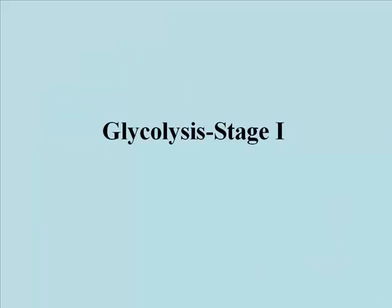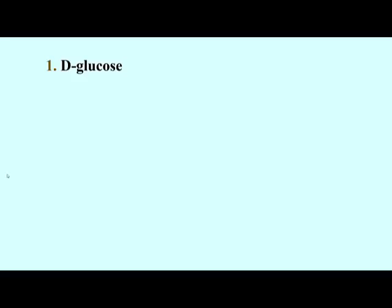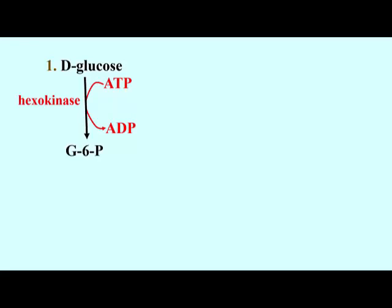Let's take a close look at stage 1 of glycolysis. Glycolysis begins when D-glucose enters a cell. The first reaction involves the transfer of a phosphate from ATP to glucose. You should recall seeing a computer model of the hexokinase enzyme undergoing induced fit after binding a molecule of glucose. Enzymes that catalyze phosphate transfers between ATP and other molecules are often called kinases. The standard free energy change for this reaction, conducted in a closed system under standard conditions, is minus 4 kcal per mole — an exergonic reaction. Phosphate transfers like this one are called coupled reactions.